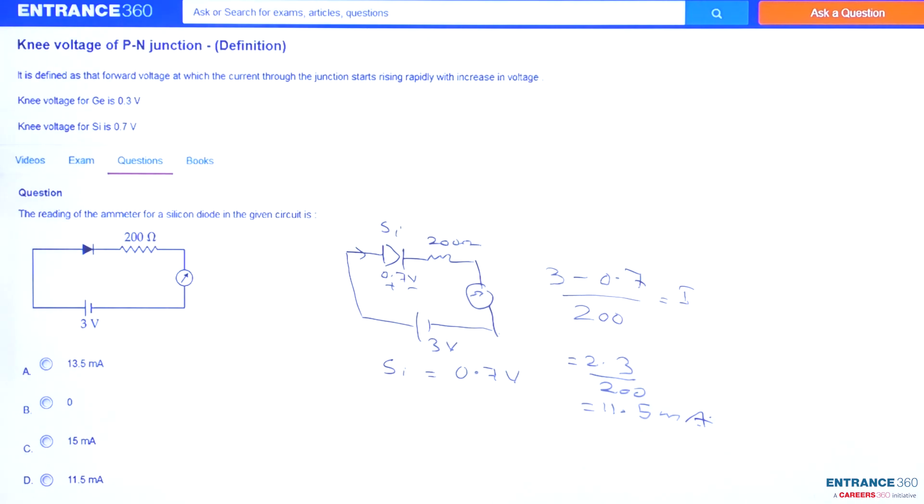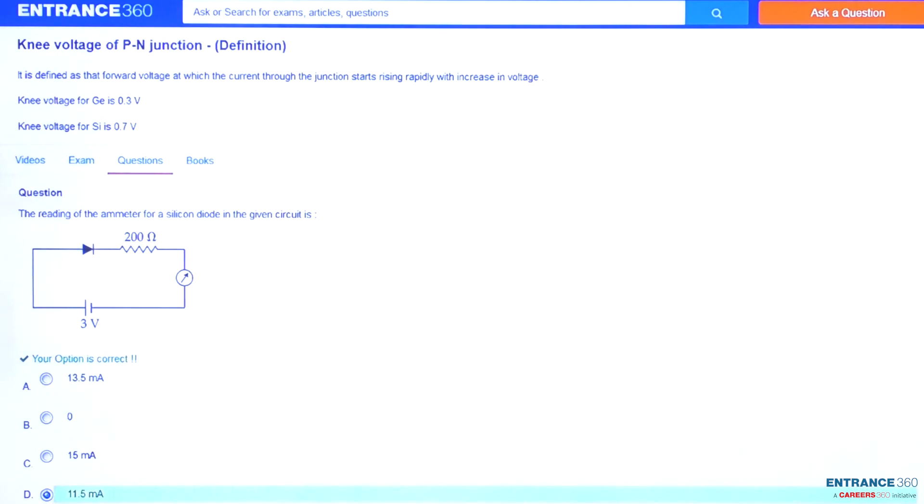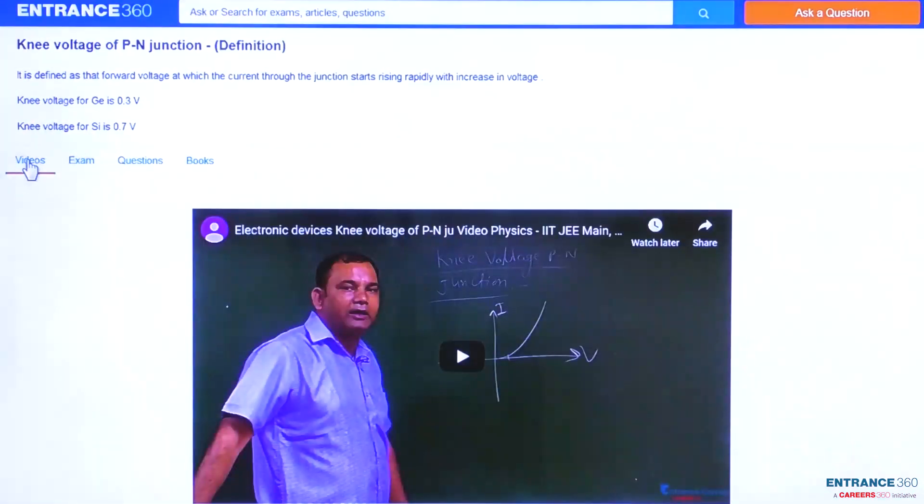So the right answer is D. To know more about the concept of diode, p-n junction diode, knee voltage, etc., you can watch the video here.